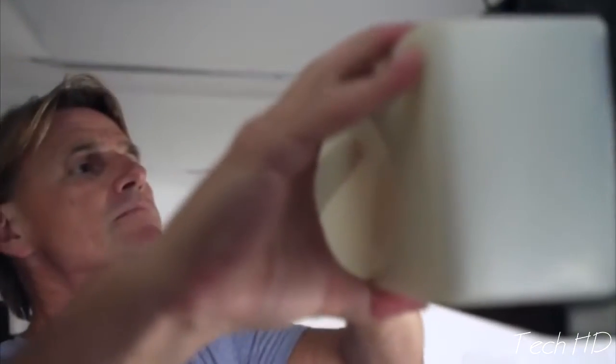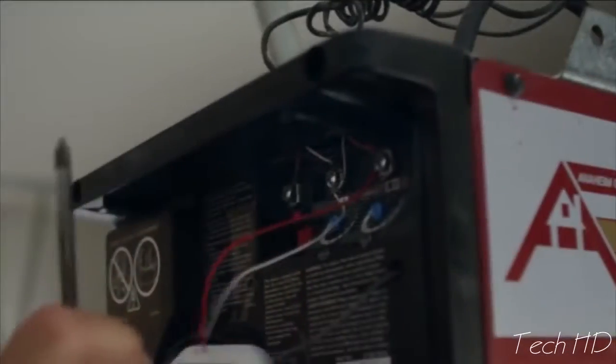Connect OpenSesame to your garage door's control box by tying its wires to the matching colored wires on the control box.